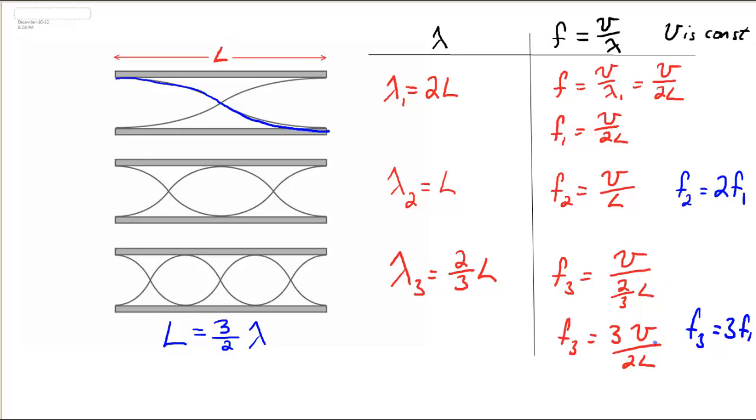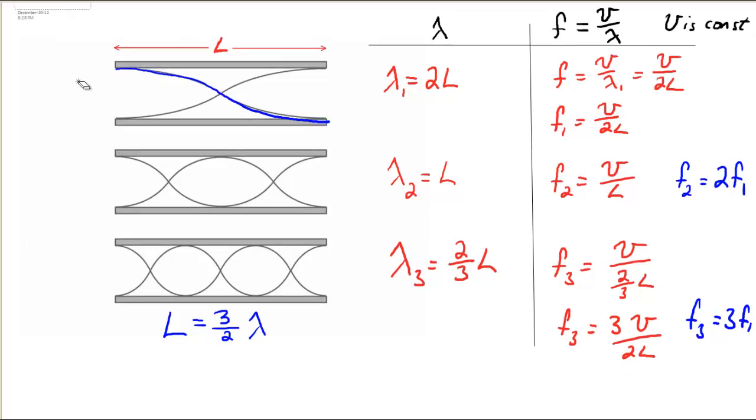All we're doing is adding on the fundamental frequency every time. So for a pipe open on both ends, the allowable frequencies are the fundamental, twice the fundamental,